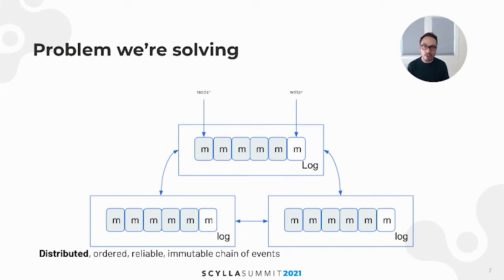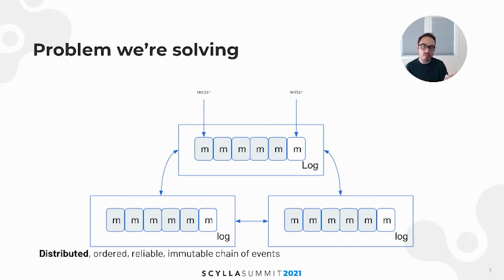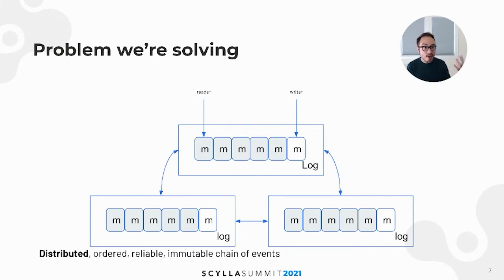Let me break this down. Events are just facts that happen in your architecture: you served an ad, you charged 10 cents to click on an ad, you sold an item of clothing, or you ordered a ride with Uber or Lyft — those are known facts. Reliable means that we can survive some particular kinds of failures, and the protocol we chose for data safety is Raft.